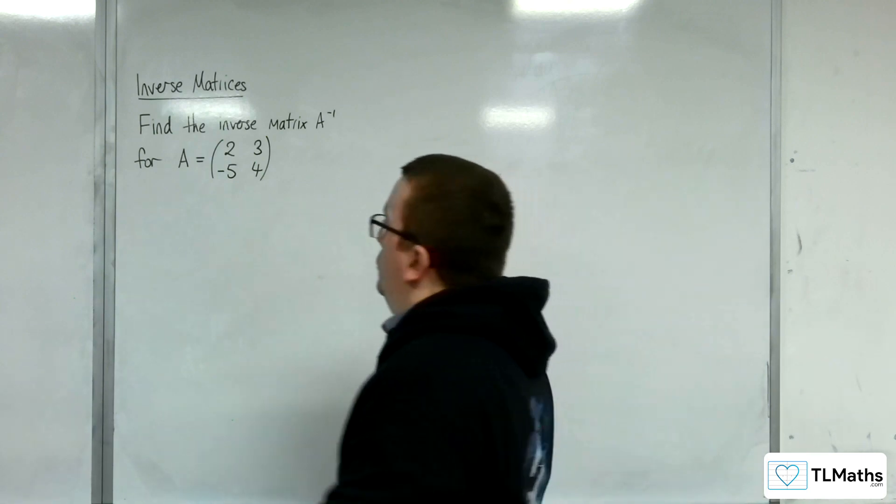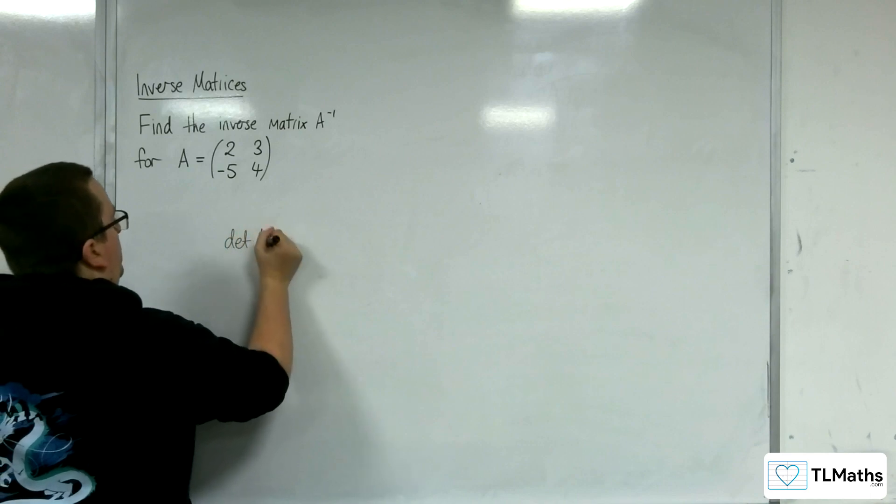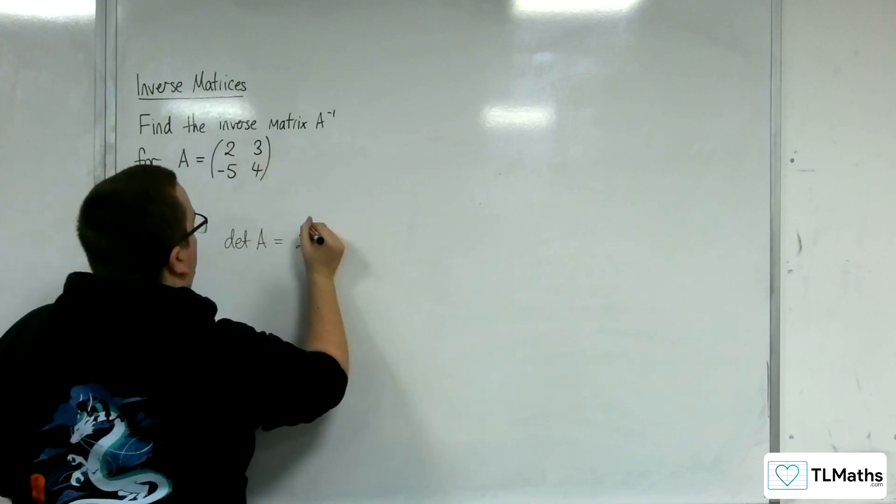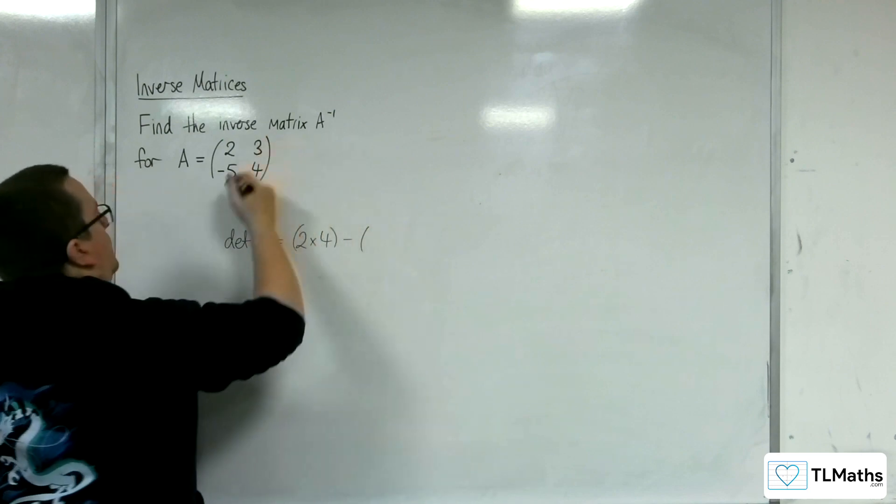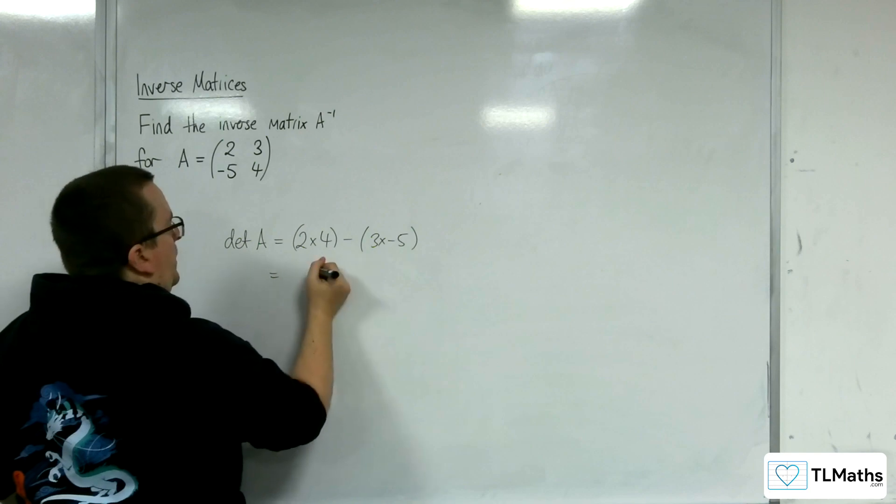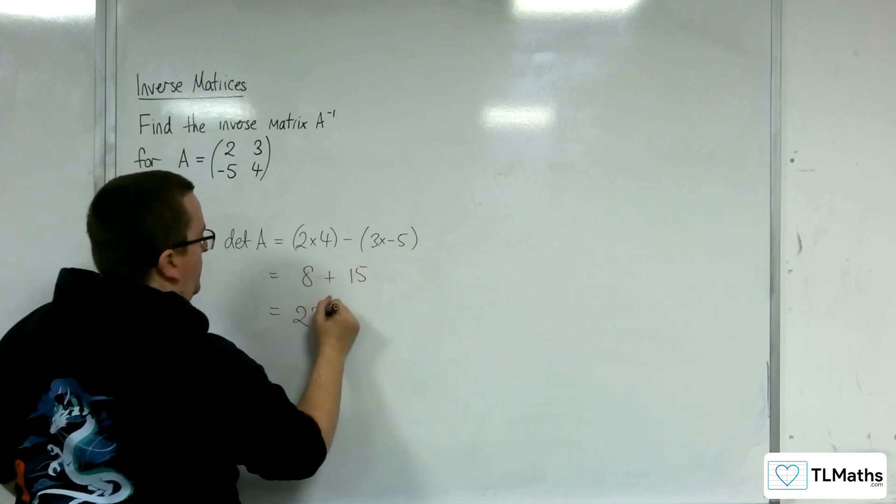So the first thing you're going to want to do is to find the determinant of A. So the determinant of A is 2 times 4, take away 3 times -5. So we're going to get 8 plus 15, and so that's 23.